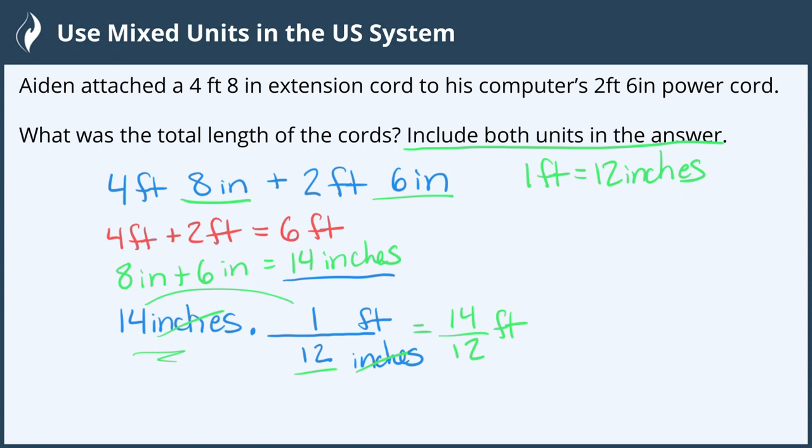Since we were asked to include both units in the answer, let's go ahead and do a long division here. 14 divided by 12: 12 goes into 14 one time, 1 times 12 is 12, subtract for a remainder of 2. In this case we're not going to use a mixed number—we're going to keep that remainder of 2. This is 1 foot 2 inches.